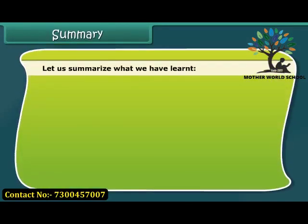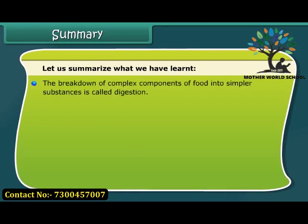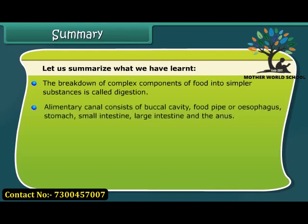Let us summarize what we have learnt. The breakdown of complex components of food into simpler substances is called digestion. The alimentary canal consists of the buccal cavity, food pipe or esophagus, stomach, small intestine, large intestine, and the anus.